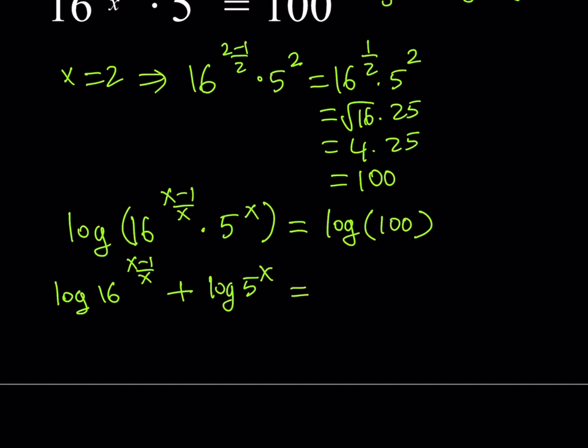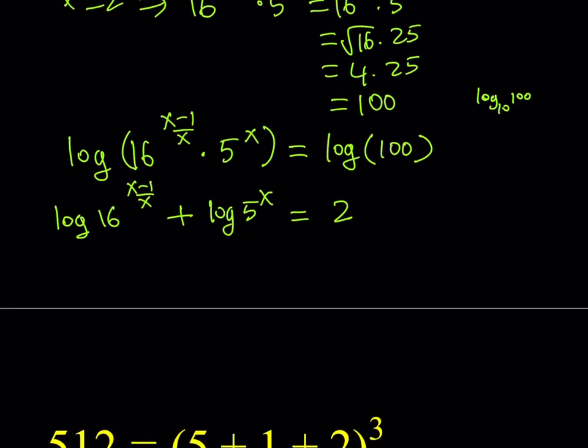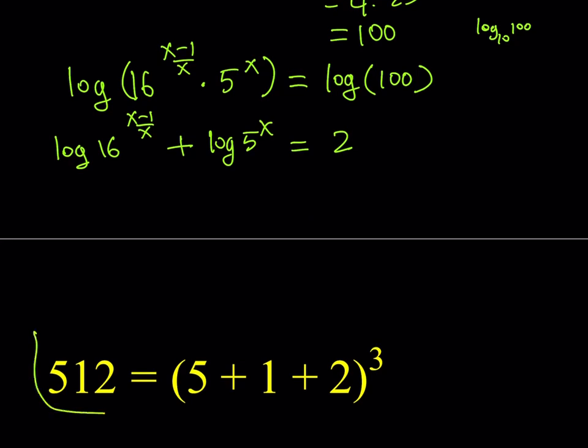We're going to be getting log of 16 to the power x minus 1 over x plus log of 5 to the power x. What is log 100 in base 10? Well, 10 to the power, that number needs to be 100, so that number is 2. It's the number of zeros. That's what's cool about base 10. So log of 1 million would be 6 because 1 million has 6 zeros.